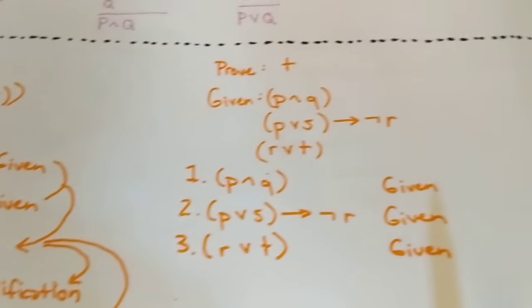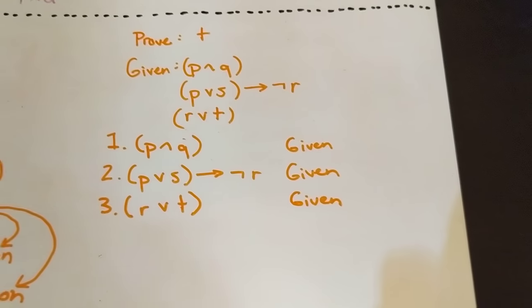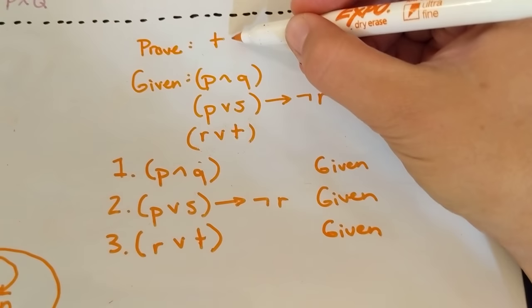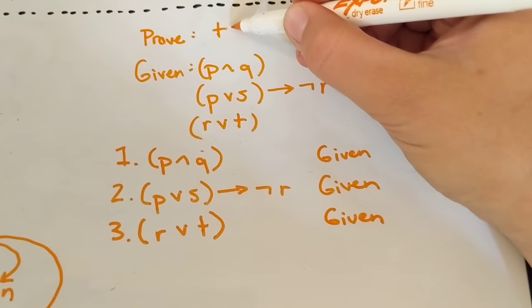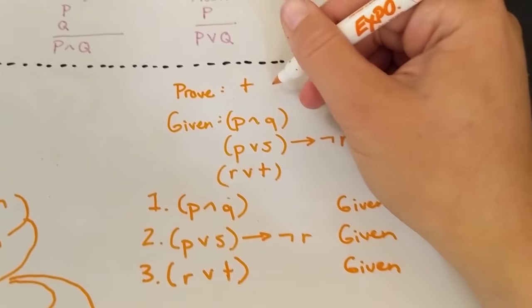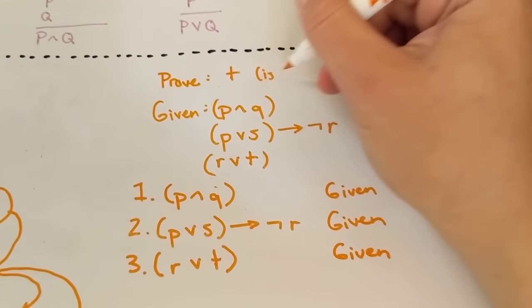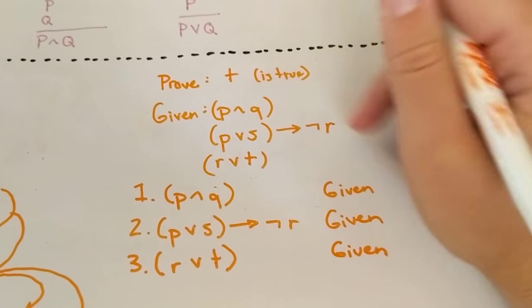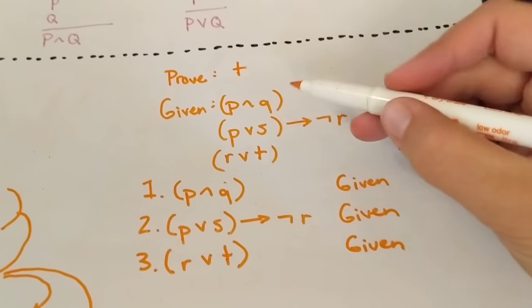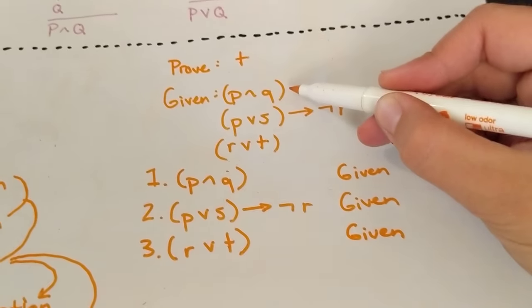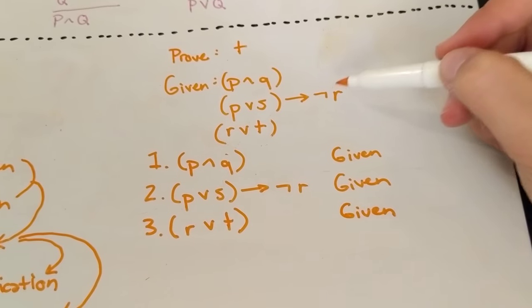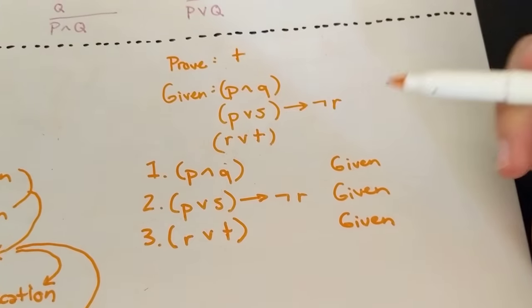All right, we're going to do one more on this video, and then we'll start mixing our logic laws with the rules of inference in the next video. So in this one, we are being asked to conclude that T is true in our model. So prove T is true. So when somebody says prove T is true, that's what you want to think in your head. I'm going to erase that just because it's confusing. But that's what you want to think in your head. Given that P and Q is true, P or S, or P or S implies not R is true, and R or T is true. So this is a little bit less transparently obvious than this, but it's actually fairly easy to prove given these givens.